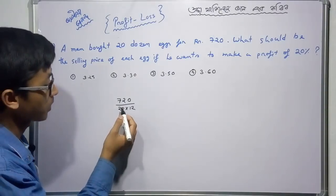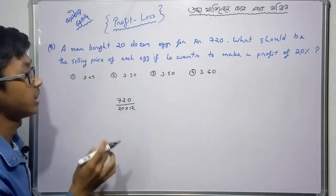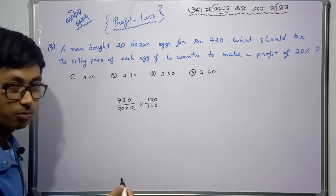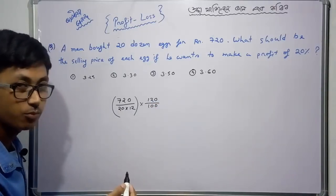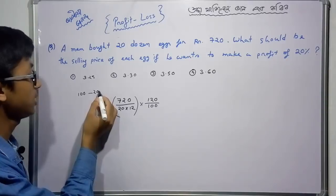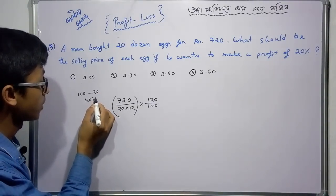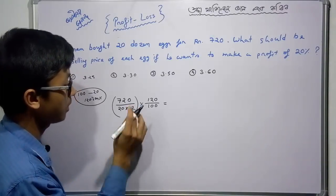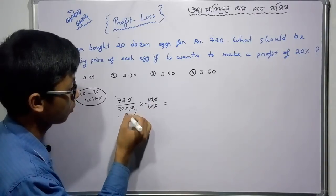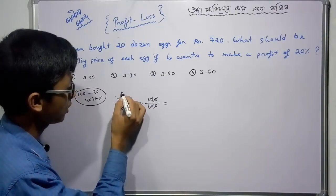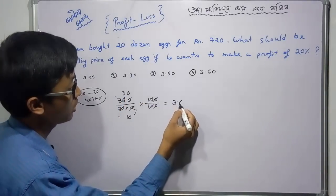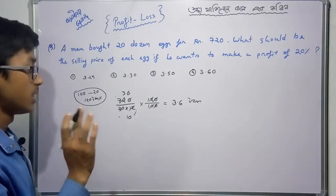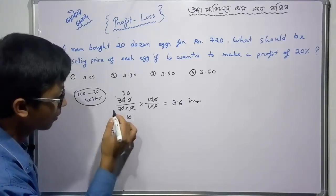So this is the price of each egg. Working through the calculation step by step, we can determine the cost price and then apply the 20% profit margin to find the selling price. After calculating, we get 3.6 taka, so the selling price with 20% profit will be the cost price plus the profit amount.